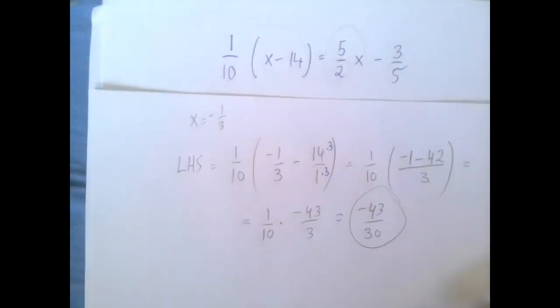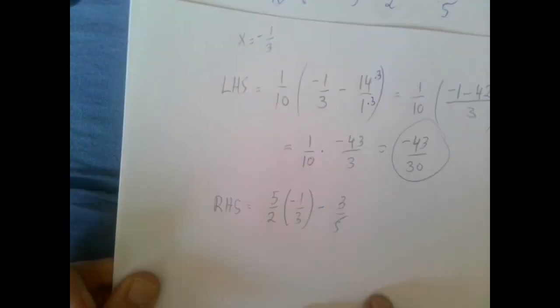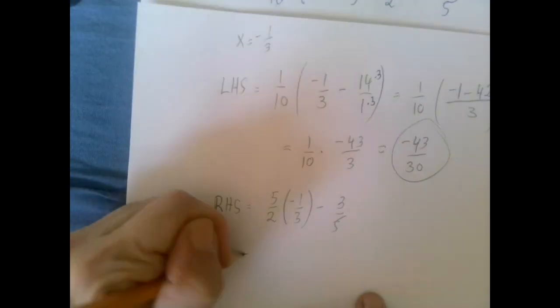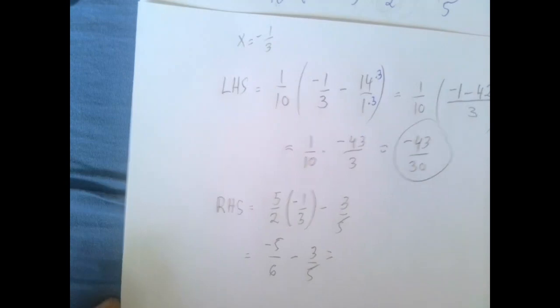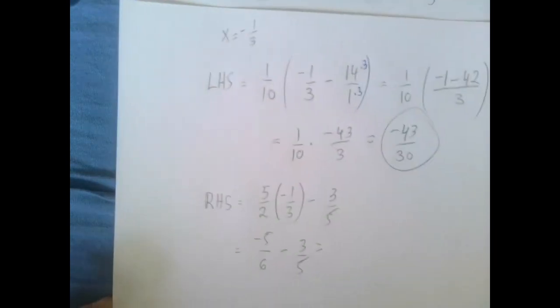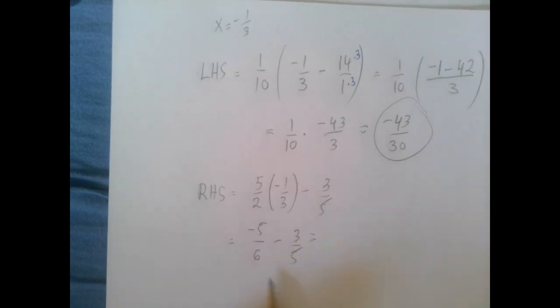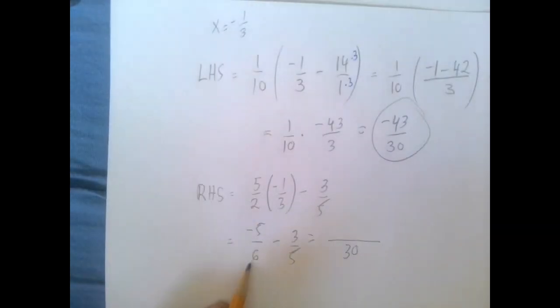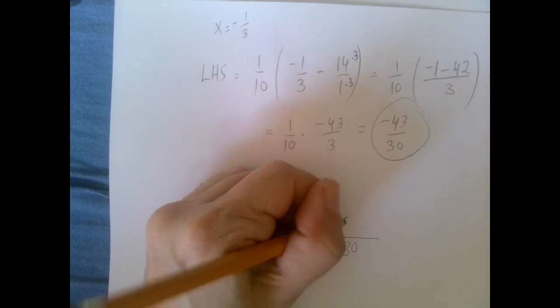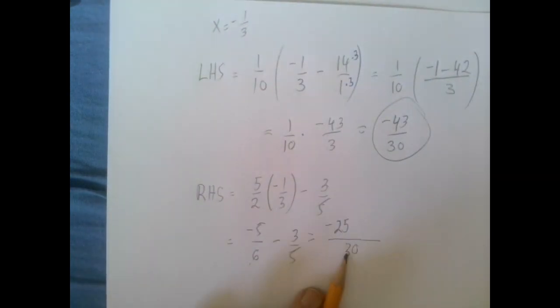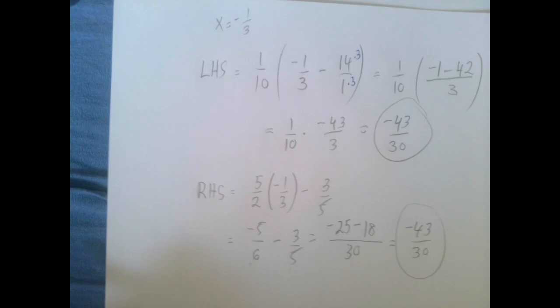So the right hand side would be 5 over 2 times negative 1 over 3 minus 3 fifths. So the multiplication would be negative 5 over 6 minus 3 over 5. See we're going to be forced to the same denominator as the other side, that's sort of encouraging. So the common denominator is 30. 6 to 30 that was 5, 5 times 5 is 25. 5 to 30 that was 6, 6 times 3 is 18. We did get the same answer.